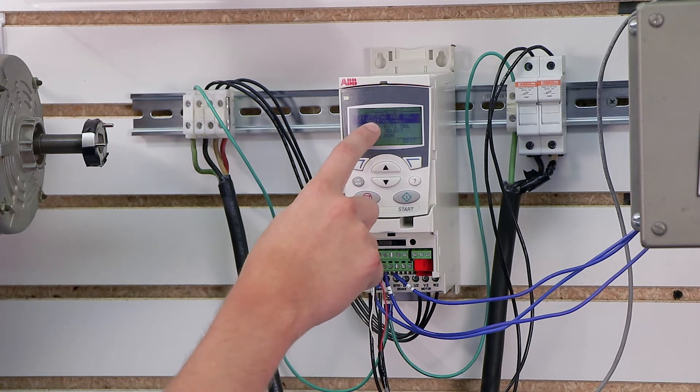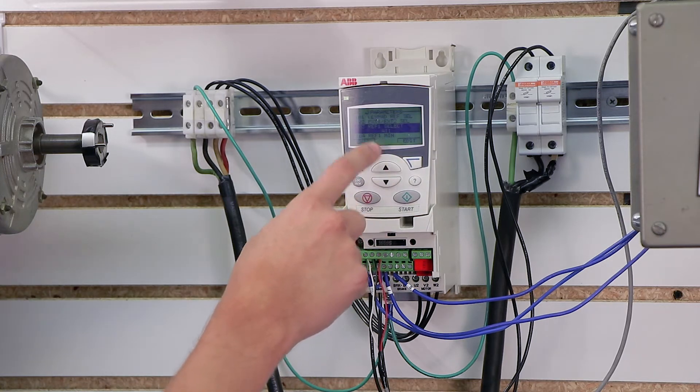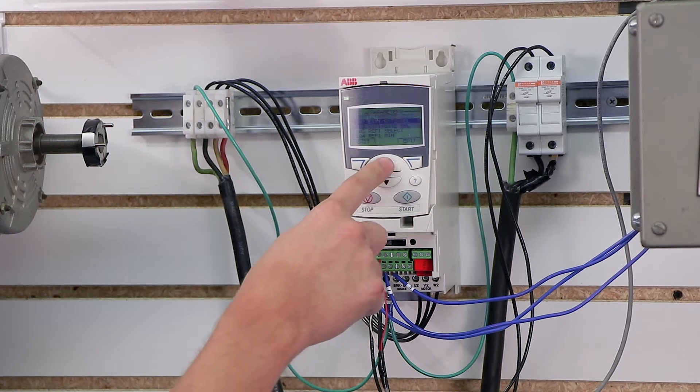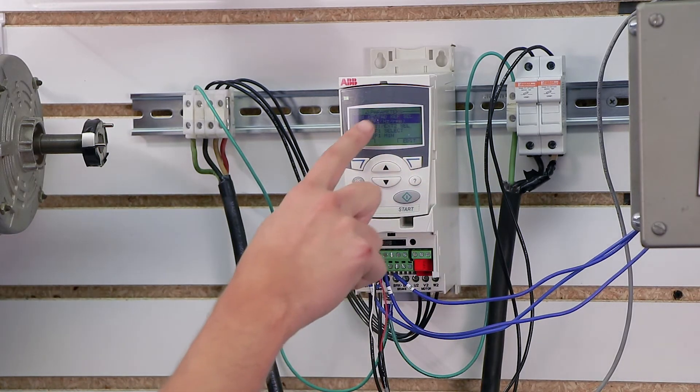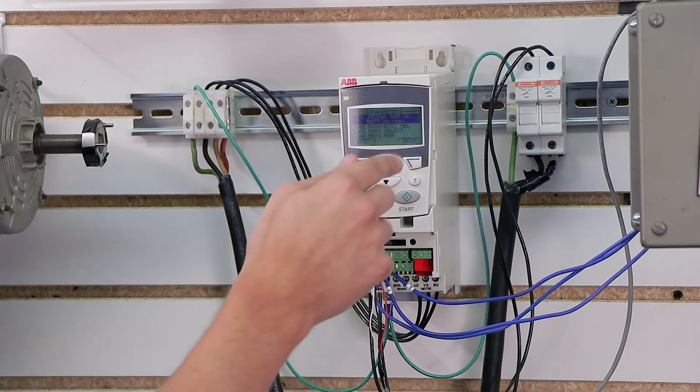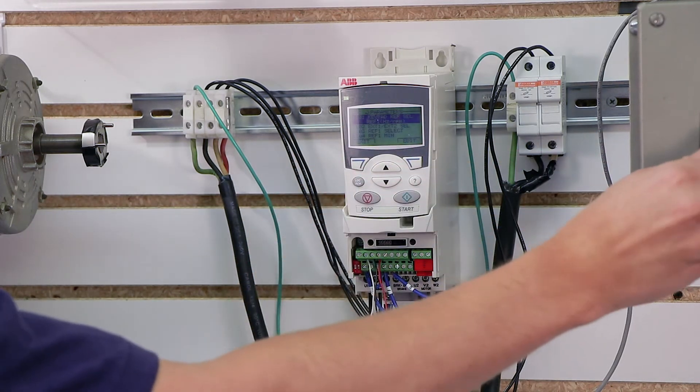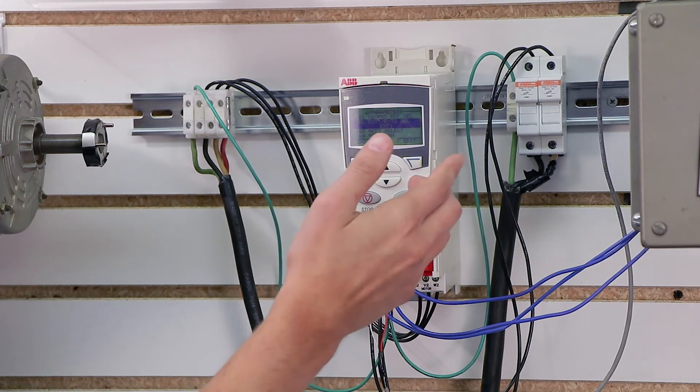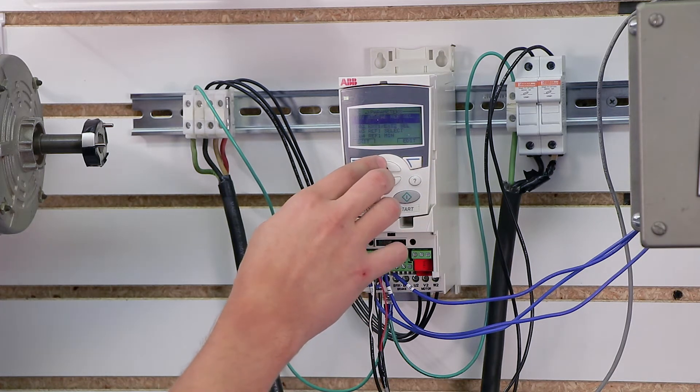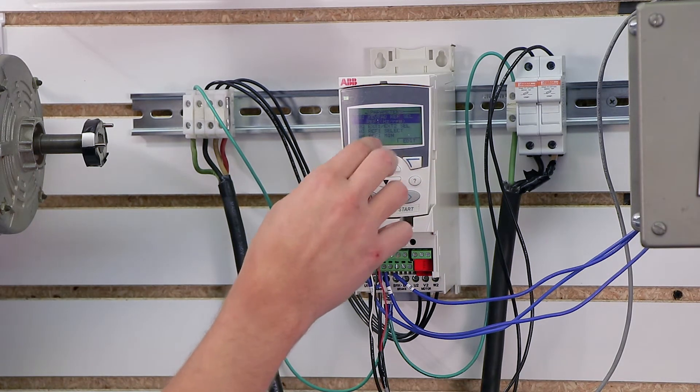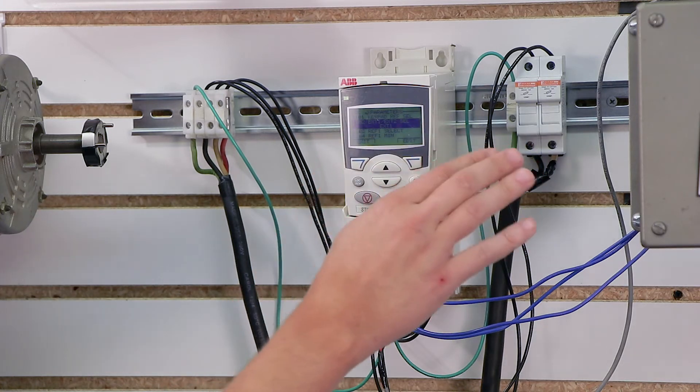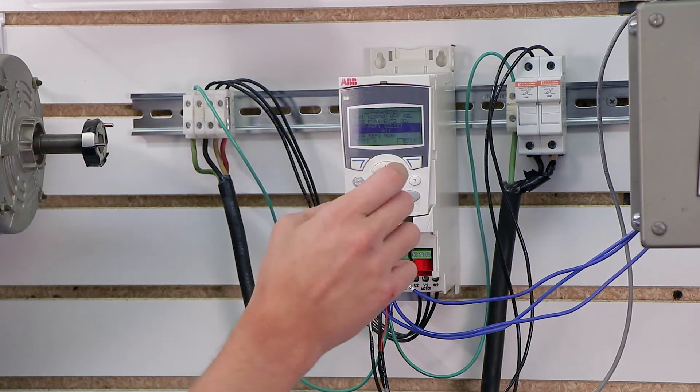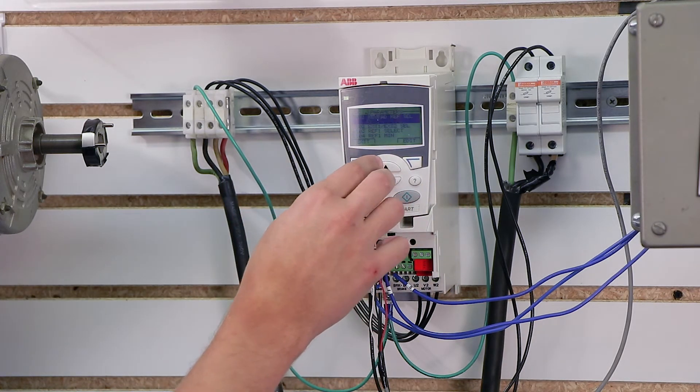When we go into parameter 1103, we're actually going to define what reference 1 is. The purpose of these first two parameters is to let you switch between two different speed references. Let's say you're in the middle of running off of a speed pot, and you suddenly want it to switch over to an external analog reference from like a PLC. These first two parameters can let you switch between two different references at the same time. Then we define what those references are in 1103.